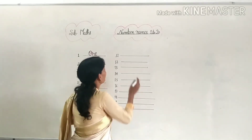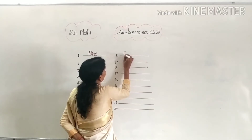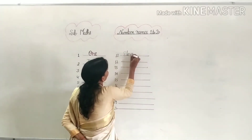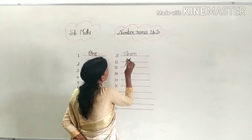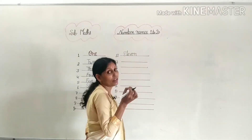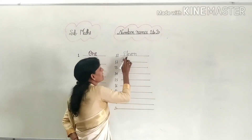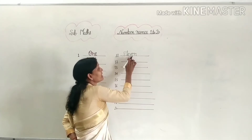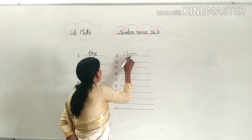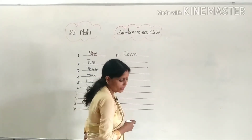Now let's look at 11. The spelling of 11 is E-L-E-V-E-N. The spelling of 11 is a little longer, which students find a bit tough.